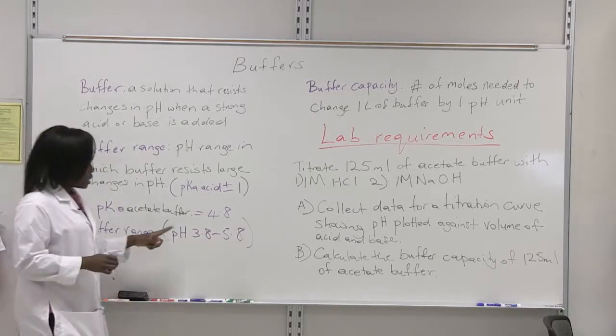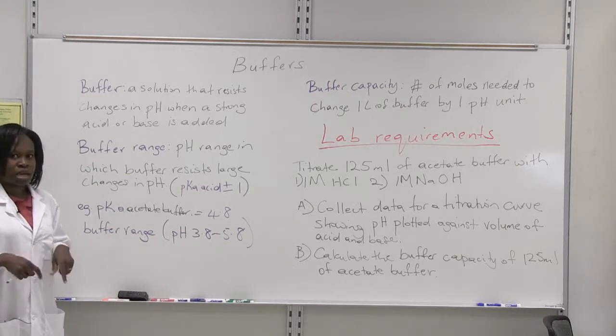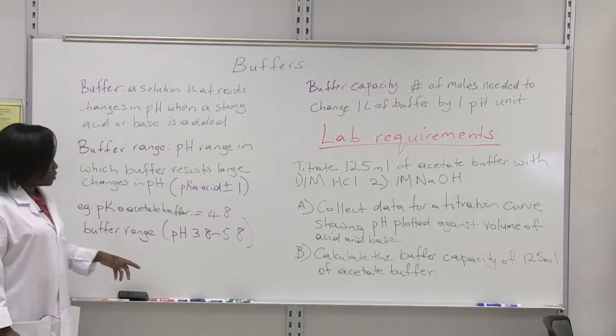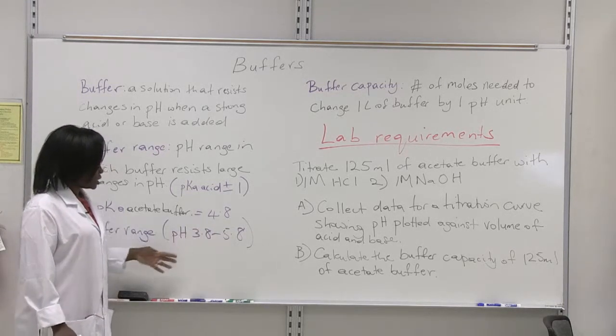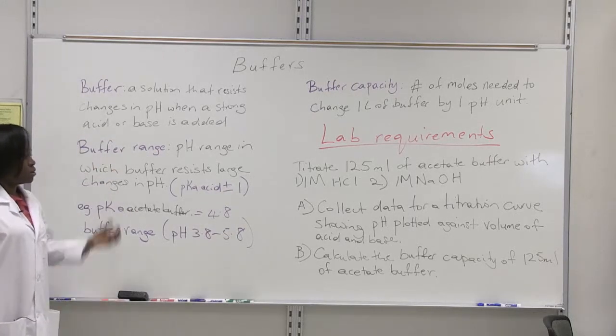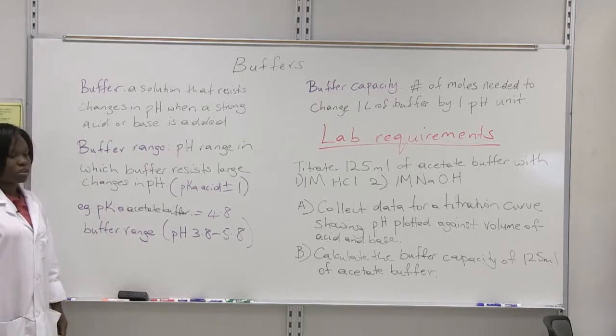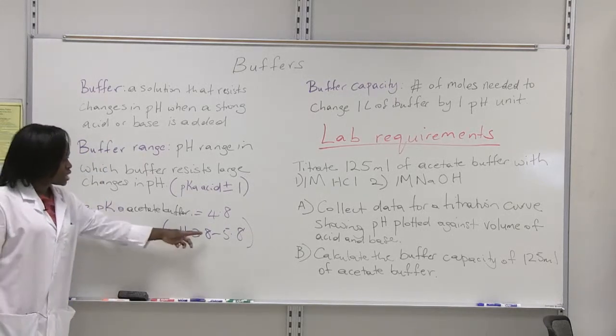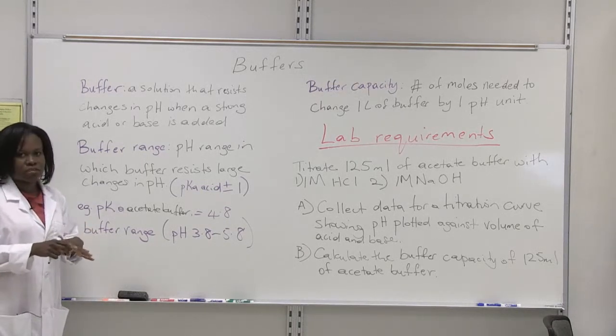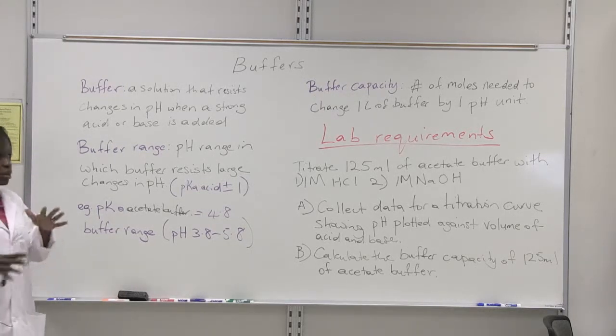If the pH of the buffer is outside of that range, then it will cease to act like a buffer. If you were to add a base to a buffer that was outside of the range, the acetate buffer being probably at pH 7, when the base is added, the pH is going to be drastically increased. Whereas if it was in the range, the addition of sodium hydroxide would cause a very slight change, if any. That is why buffers are important to keep the system in equilibrium.